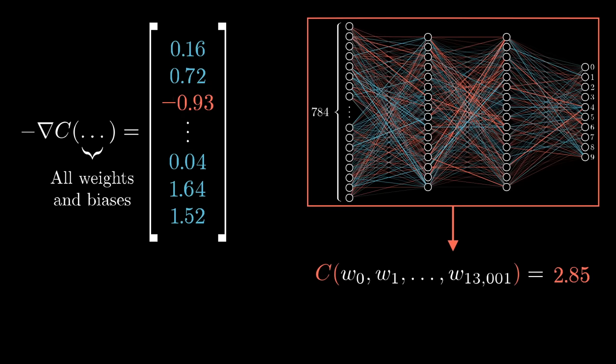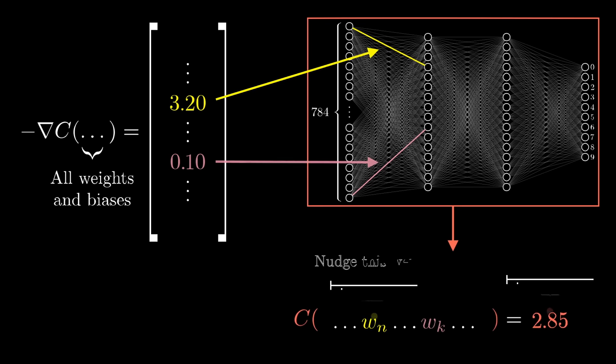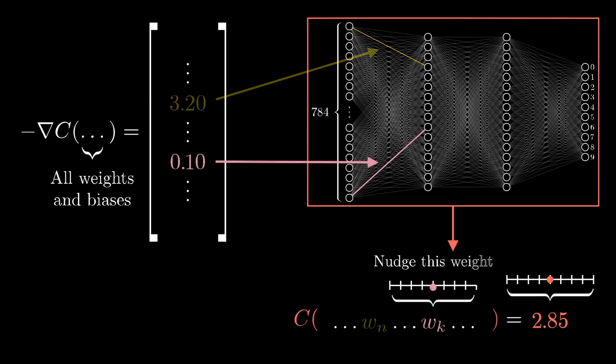For example, let's say you go through the process I'm about to describe, and you compute the negative gradient, and the component associated with the weight on this edge here comes out to be 3.2, while the component associated with this edge here comes out as 0.1. The way you would interpret that is that the cost of the function is 32 times more sensitive to changes in that first weight, so if you were to wiggle that value just a little bit, it's going to cause some change to the cost, and that change is 32 times greater than what the same wiggle to that second weight would give.